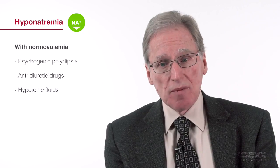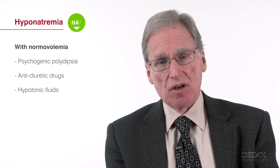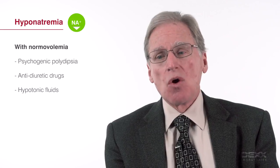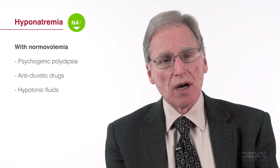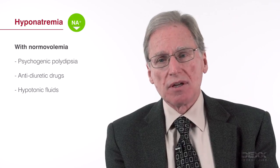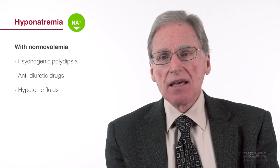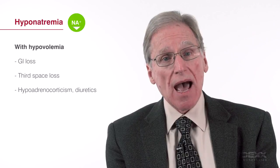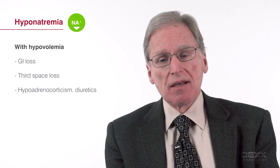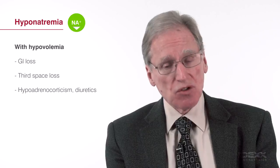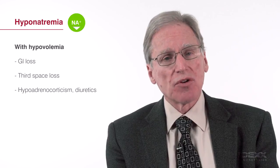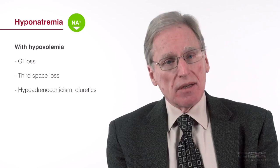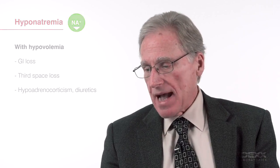You can also see hyponatremia with normal circulating volume, such as in an animal with psychogenic polydipsia or if an animal has received drugs that interfere with water excretion. Finally, you can see hyponatremia in patients with hypovolemia — and actually this is most common — such as with gastrointestinal losses, third space loss, hypoadrenocorticism, or with diuretic administration.